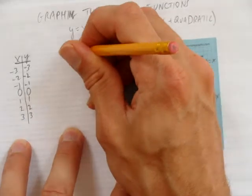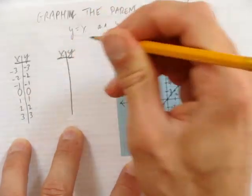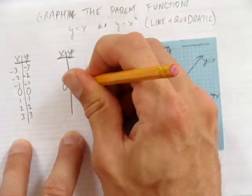When you go to make the table for quadratic, we'll use the same x values just to compare. Because we know the quadratic parent function, y equals x squared, the vertex is at 0, 0.